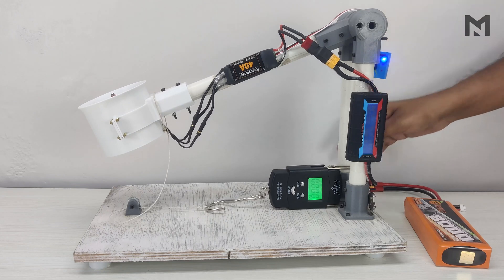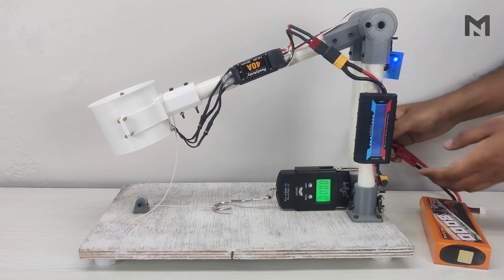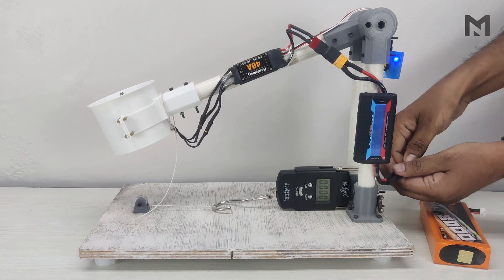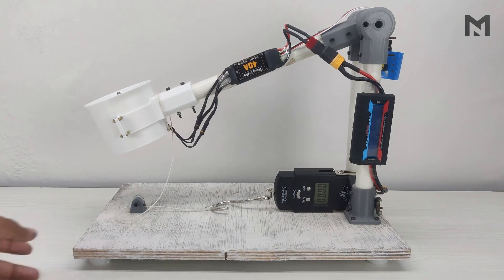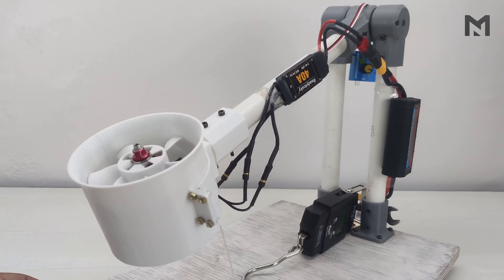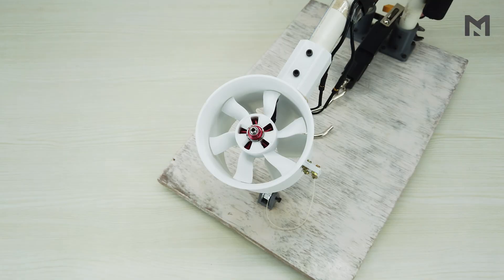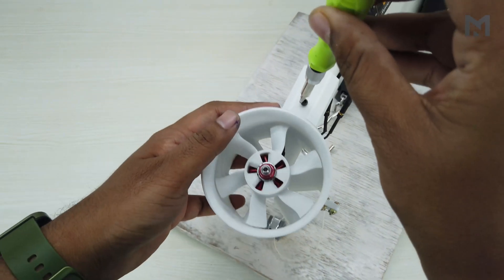This time we get a maximum thrust of 325g, which is about 10g more than the previous one. Even though 10g seems a small increment, on increasing the voltage of the battery, it will have a huge impact. So now we will be using the high pitched blade casing for the test.